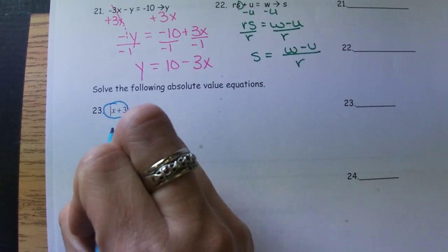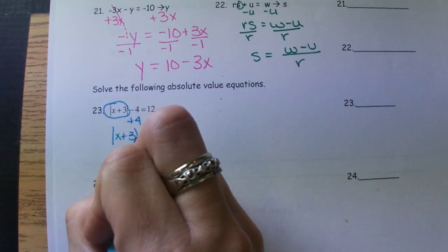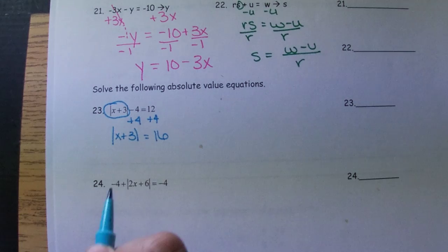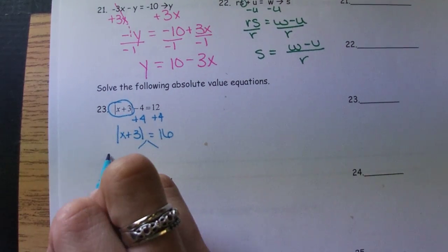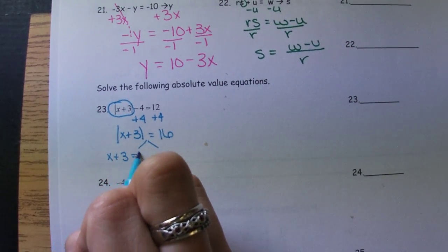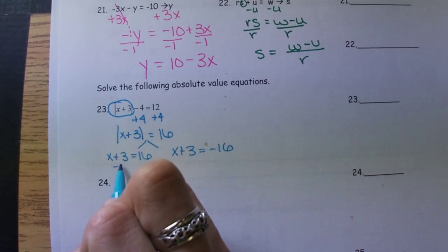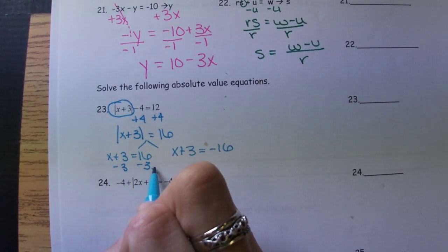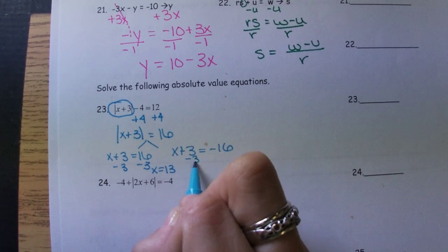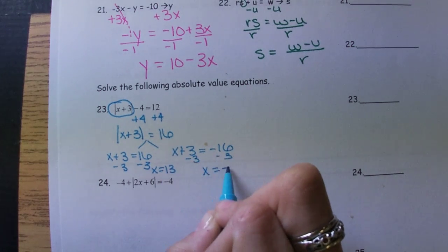Then we'll do two options. So we'll have X plus 3 equals 16. And X plus 3 equals negative 16. X equals 13. X equals negative 19.